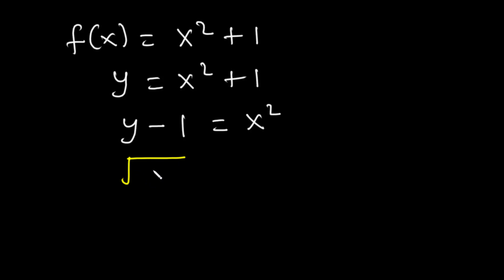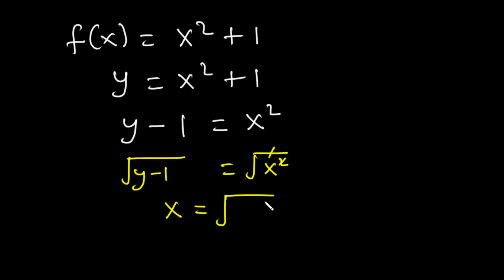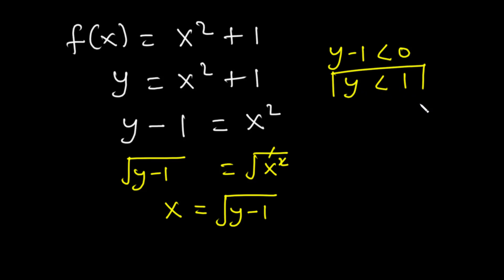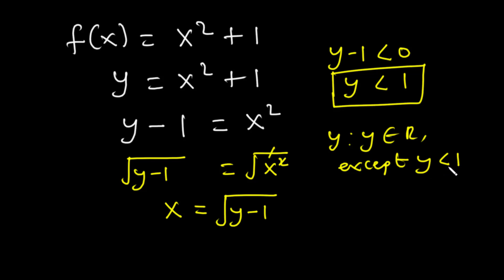So it's going to be the square root of y minus 1 is equal to the square root of x squared. The squared cancels the square root, and then we have x is equal to the square root of y minus 1. Now, what values of y will make the function defined? We need to set what's inside the square root to be greater than or equal to 0, so y minus 1 is greater than or equal to 0, giving us y is greater than or equal to 1. So the range is y such that y is the set of all real numbers except y is less than 1.